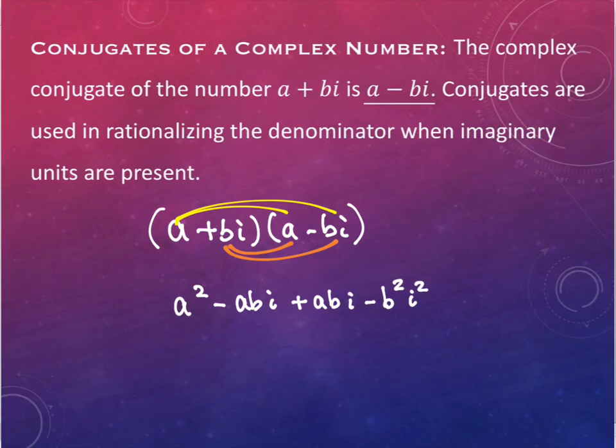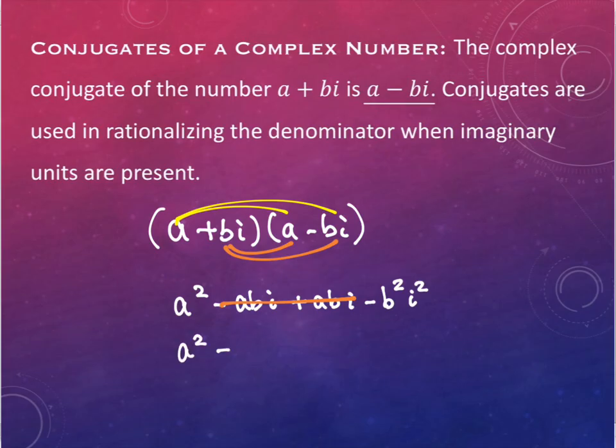The two middle ones cancel — they're the same. This happens every time with conjugates. This actually happens in an algebra situation as well — you saw it happen with something called difference of squares. That's what this is utilizing. So these two pieces add to zero, leaving me with a squared minus b squared i squared.